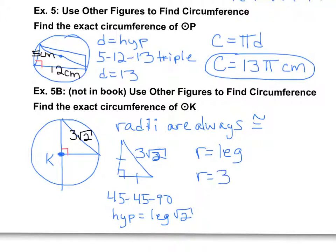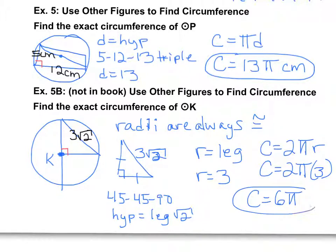Using the radius to find again exact circumference, because I know radius this time, circumference is 2πr. Plug in what you know: 2π times 3. The exact circumference is going to be 6π units.